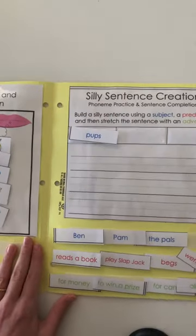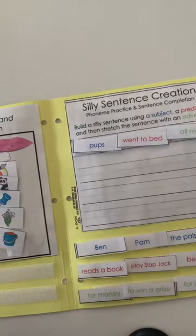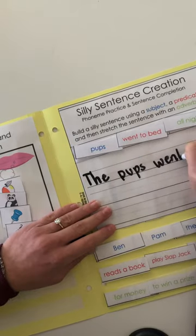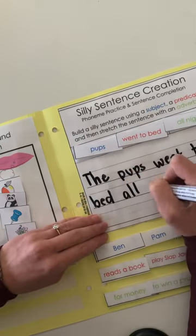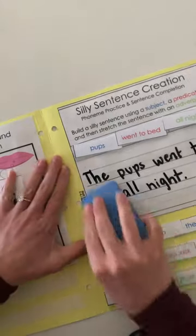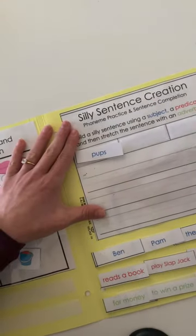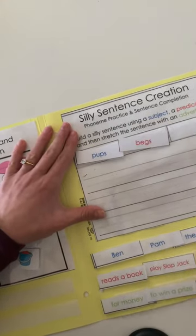We will also have a silly sentence creation where they take words that have the key sounds and use them in a sentence. We really like laminating these pages so that we can erase the sentences and have students write a second one or use it with multiple students.